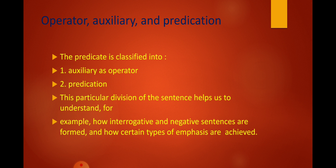Another important terminology that we could use here is what we call the operator. Let us see the relationship between the operator, auxiliary, and predication. The predicate is classified into, number one, an auxiliary as operator, and number two, predication. The operator is the auxiliary verb that we require to perform the negative process as well as the interrogative process. When we change the sentence into the negative form or interrogative form, we are in need of this operator.